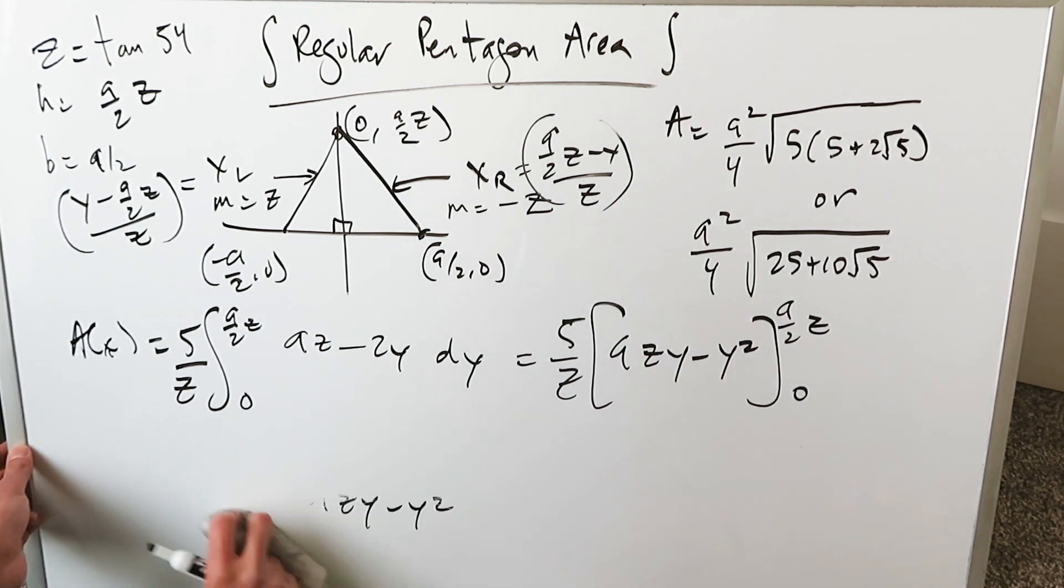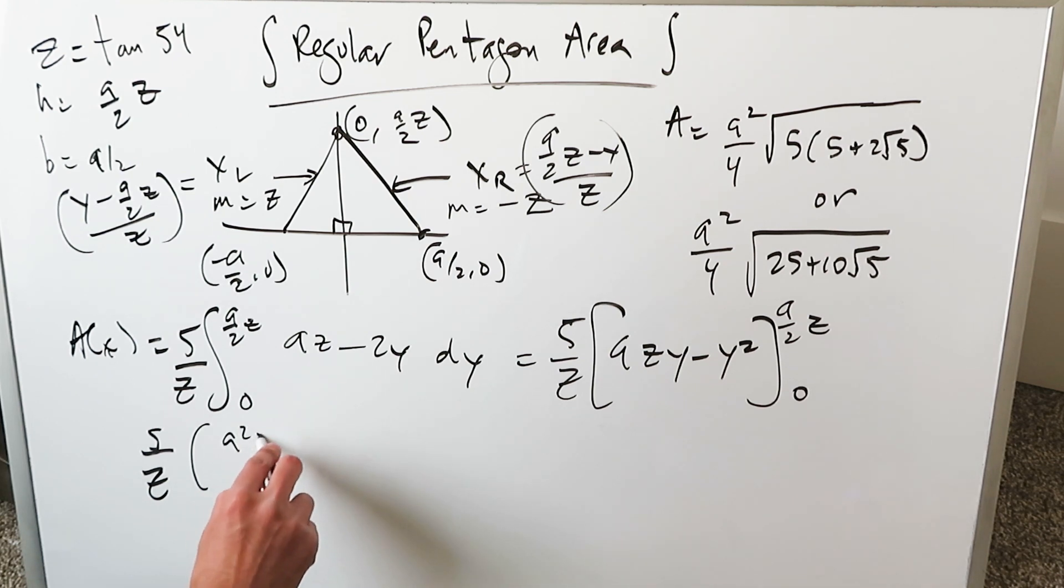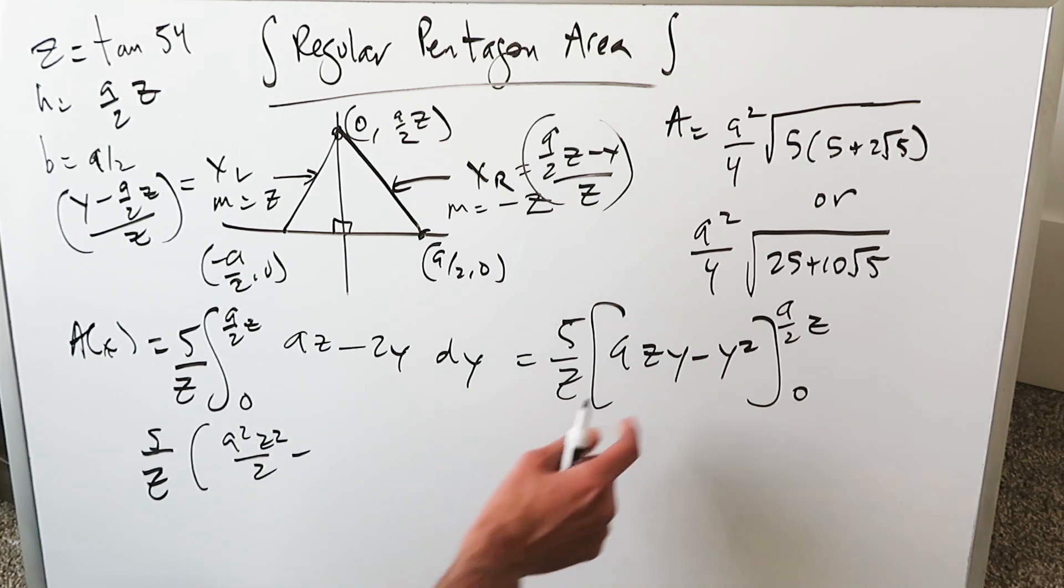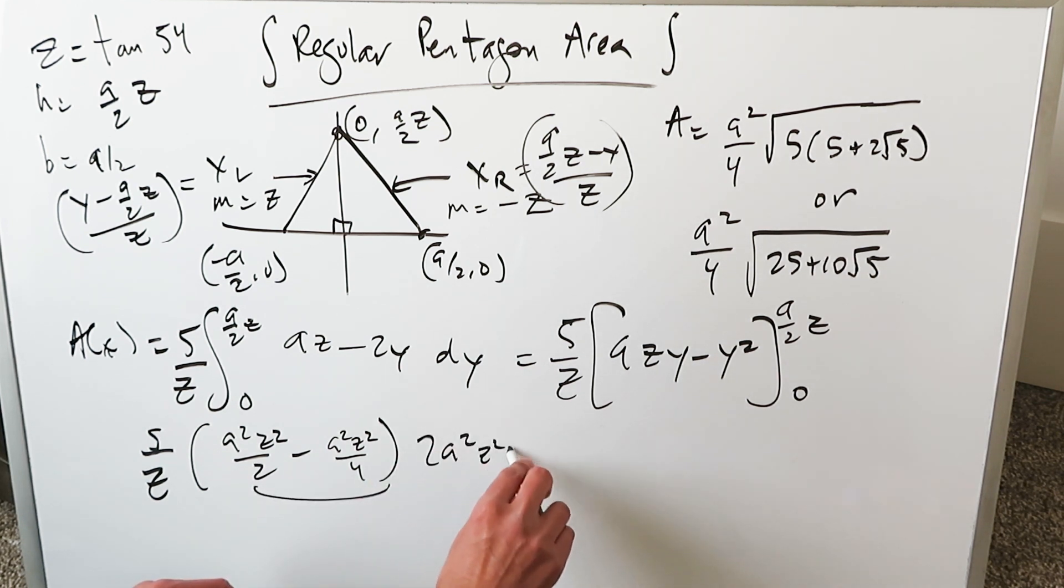The anti-derivative AZY minus Y square, upper limit A over 2Z, lower limit 0. Bring in your limits. You have AZ and a Y and then AZ over 2 coming into play. You'll have A square Z square over 2 minus you'll have A over 2Z square whole square which will be A square Z square over 4.